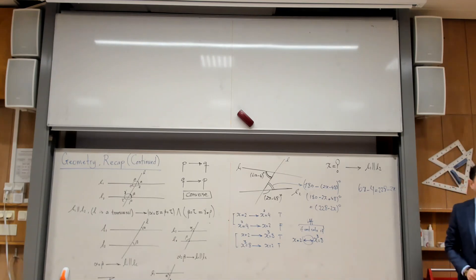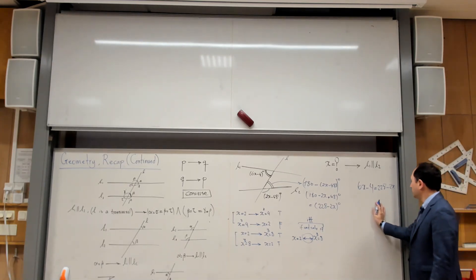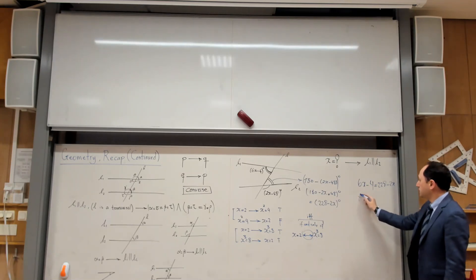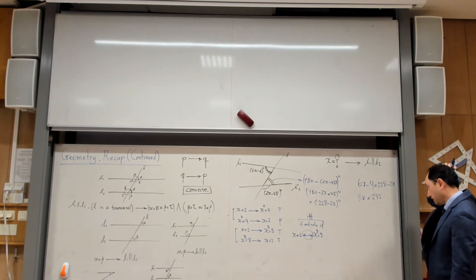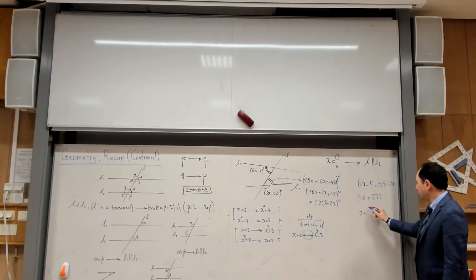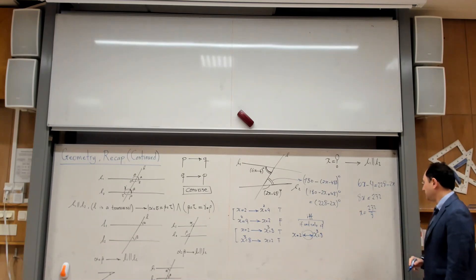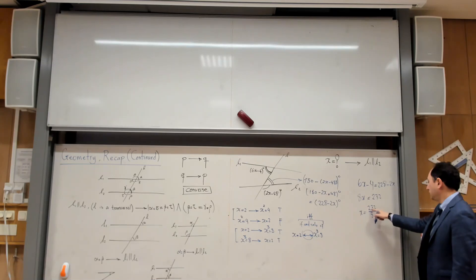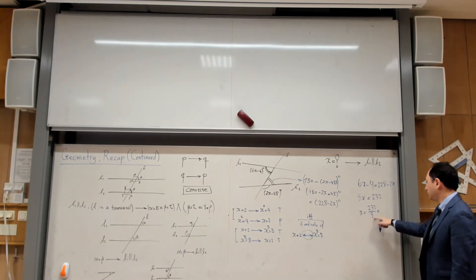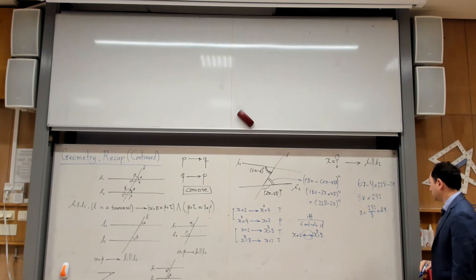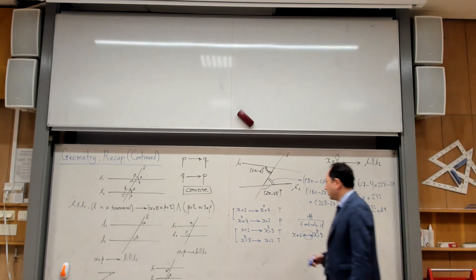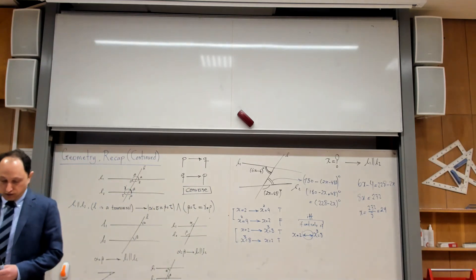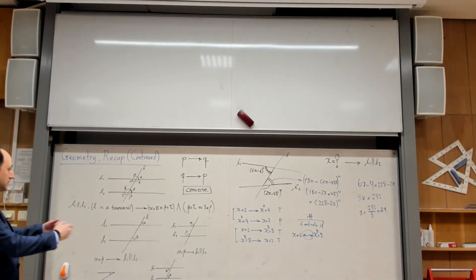Now I want to find x so that the Z shape gives parallel lines — meaning the angles must be equal. So: 6x minus 4 equals 228 minus 2x. Moving 2x to the other side gives 8x, and moving 4 to the other side gives 232. Dividing by 8 and simplifying gives x equals 29.